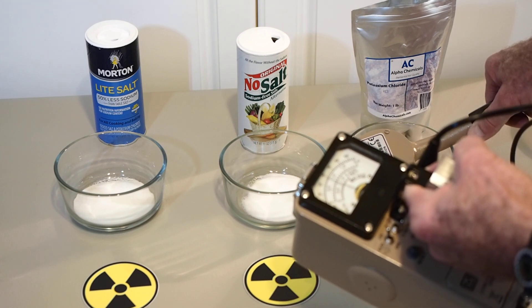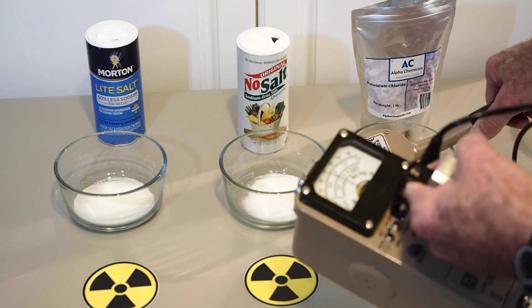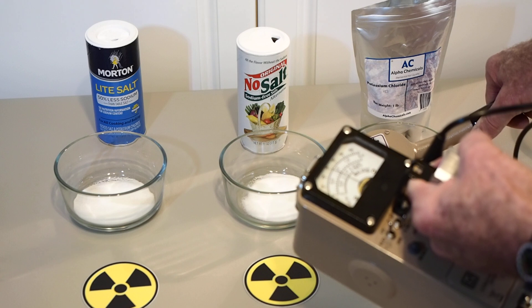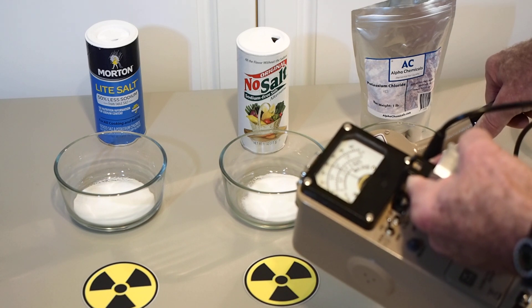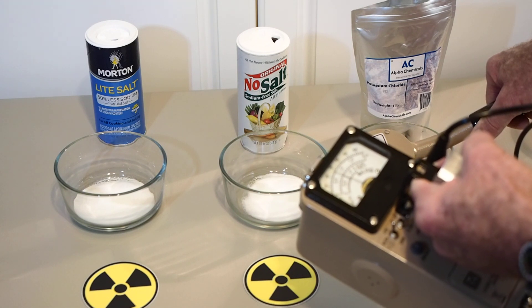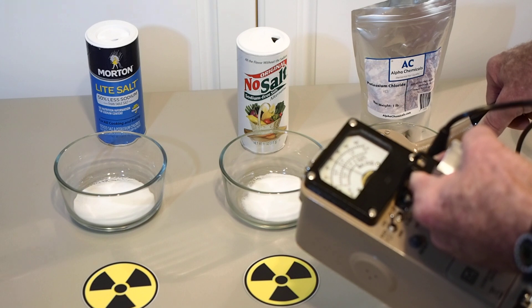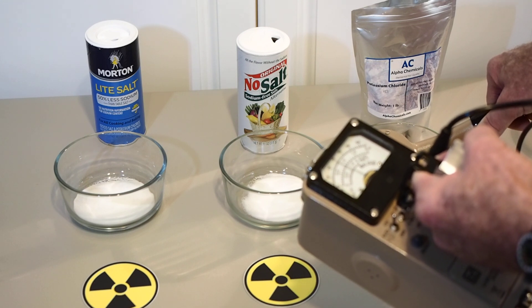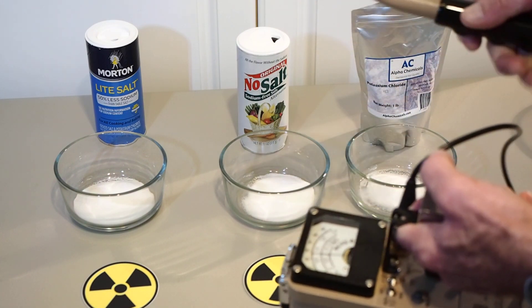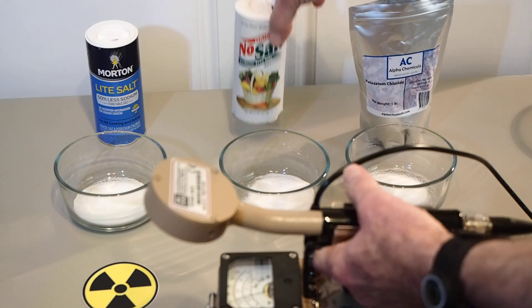And of course we subtract the 40 from the background. That leaves us with about 220 counts per minute from the actual material. Actually we're approaching 300 counts per minute right now. And that's about one inch from the source, with the detector one inch from the source. But I'm going to go ahead and call it about 260 because it's fluctuating a little bit there. We'll just call it 260 counts per minute. So slightly less than the no salt, sodium-free salt substitute.